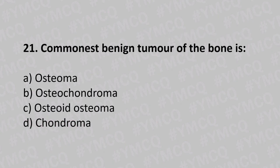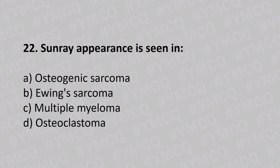Question number twenty-one: the commonest benign tumor of the bone is option A osteoma, option B osteochondroma, option C osteoid osteoma, option D chondroma. The answer is option B, osteochondroma.